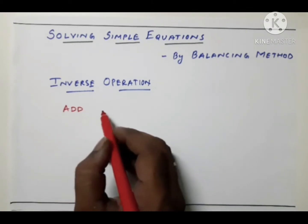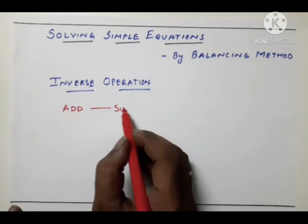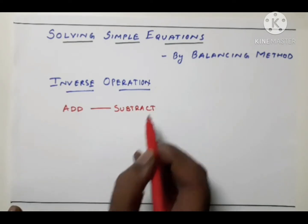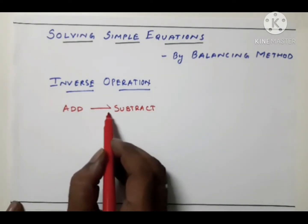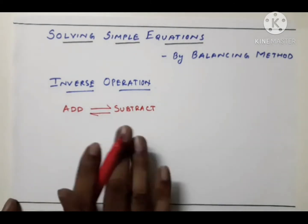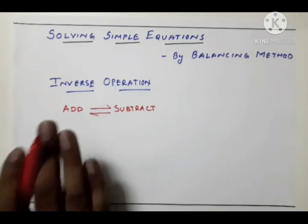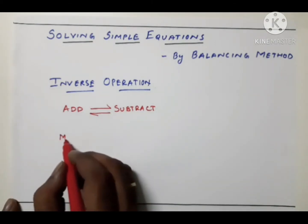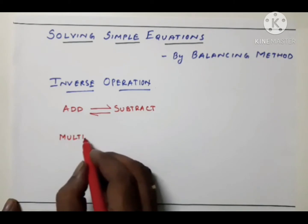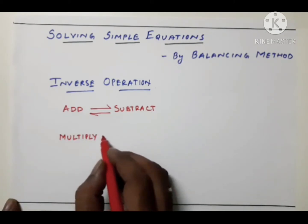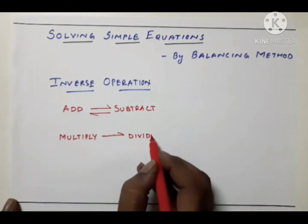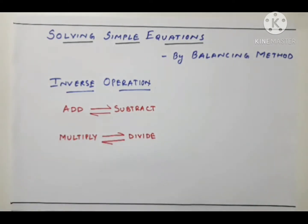For addition, the inverse is subtraction, and for subtraction the inverse is addition — they complement each other. For multiplication, the inverse is division, and for division it is multiplication. When there is an addition, the inverse will be subtraction; for subtraction it will be addition; for multiplication it is division; and for division it is multiplication. This logic we will be using in this process.